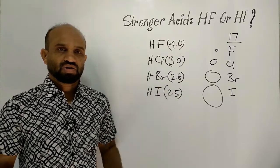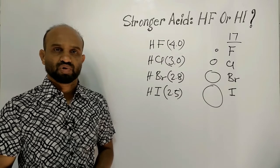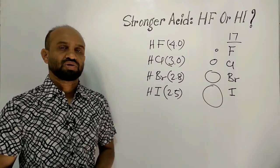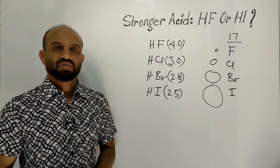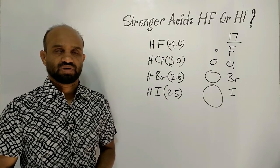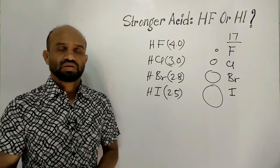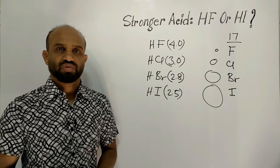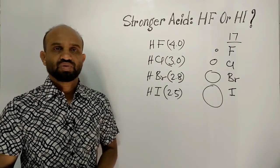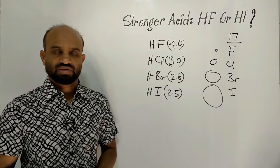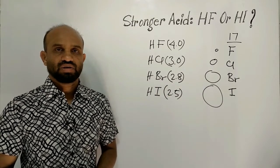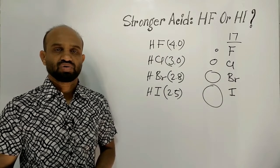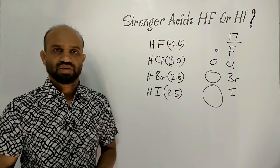Now let's define what acids are. According to the Brønsted-Lowry concept, compounds that can donate protons in water are called acids. The more easily a compound donates a proton, the stronger acid it will be. Let's see which compound has the tendency to donate protons easily.